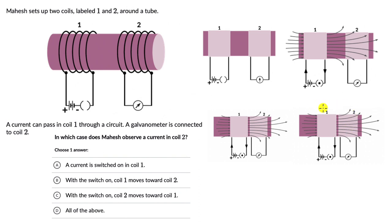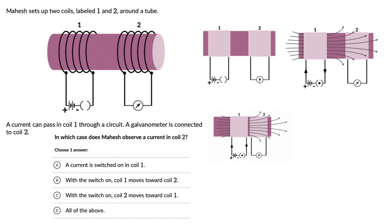The third situation: the switch is on and coil two is moved towards coil one. This looks similar — coil two moves towards coil one, and there are magnetic field lines passing through. The number of magnetic field lines through coil two will change, the flux will change, and that will induce a current. So the right option here is all of the above.